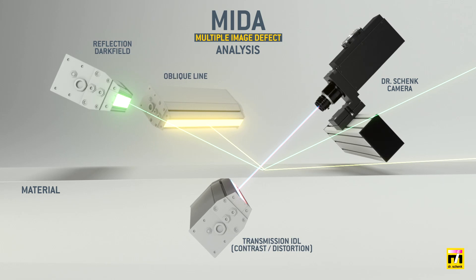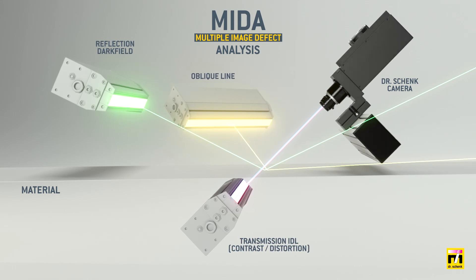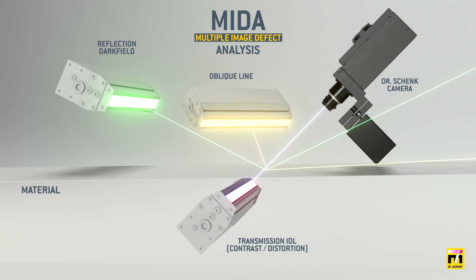With MITA, Multiple Image Defect Analysis, every defect is recorded from multiple perspectives or views, making even hard-to-detect defects visible. Compact architecture saves precious space in your production line and minimizes the number of cameras required.